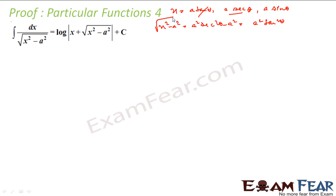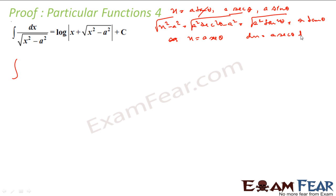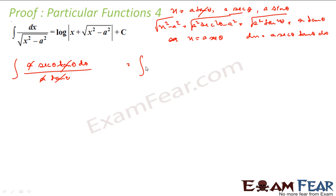So now the root of this becomes a·tan θ. My dx: if x equals a·sec θ, then dx is nothing but a·sec θ·tan θ dθ. So let's write: dx is a·sec θ·tan θ dθ, and root of x²–a² is a·tan θ. The tan θ cancels and a cancels, leaving the integral of sec θ dθ, which is log(sec θ + tan θ) plus constant.